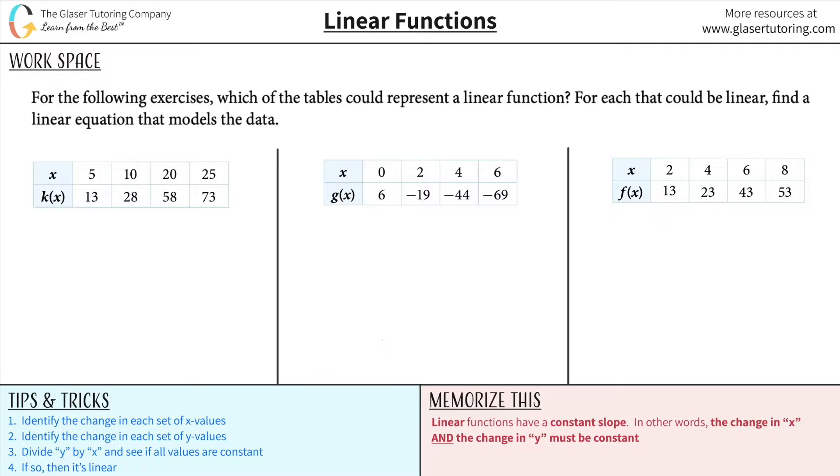For the following exercises, which of the tables could represent a linear function? For each that could be linear, find a linear equation that models the data. First thing is you have to know that a linear equation has a constant slope. That means the slope between any two points is always going to be the same.